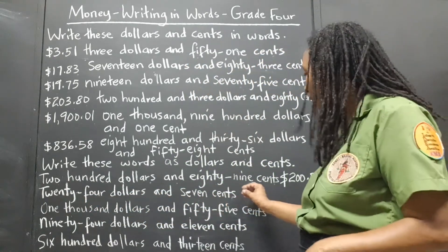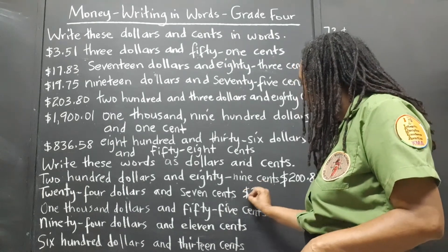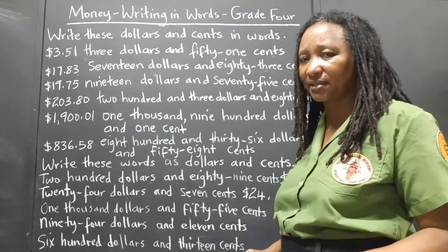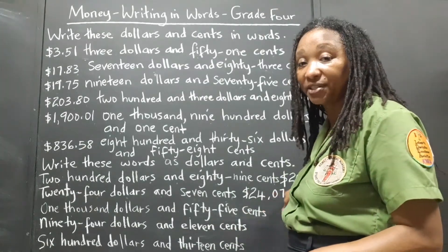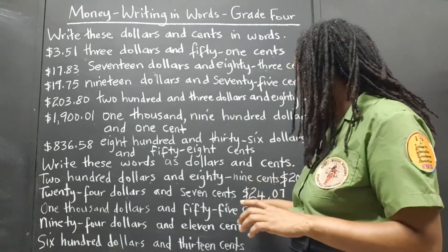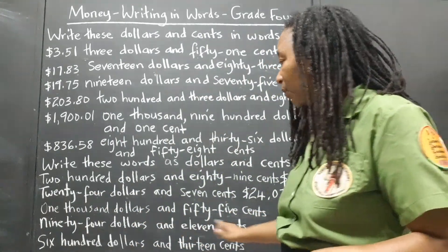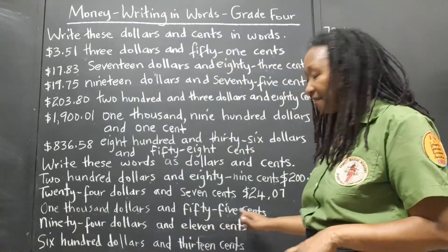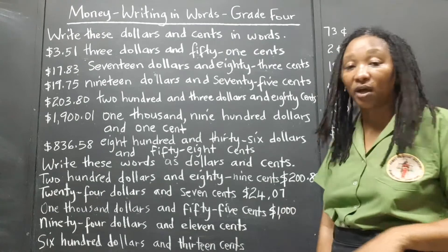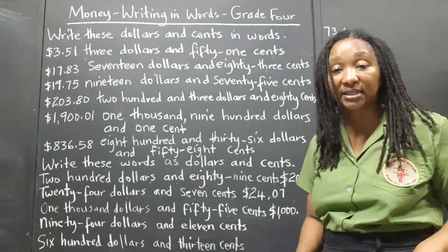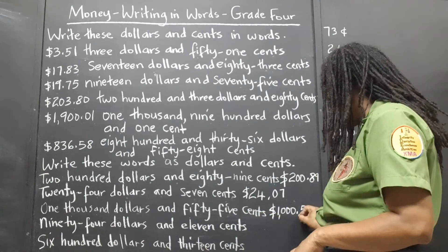Twenty-four dollars and seven cents: we put our dollar sign, $24. How do we write 7 cents? Zero, seven — there are no ten cents, just 7 single cents. So that's $24.07. One thousand dollars and fifty-five cents: we put our dollar sign, $1,000, then our decimal point to separate the dollars from the cents, and it's 55 cents — so that's a 5 and a 5, giving $1,000.55.